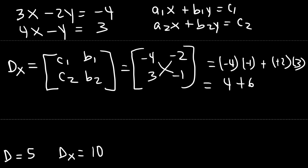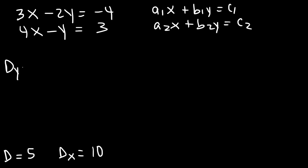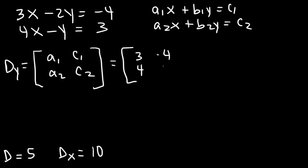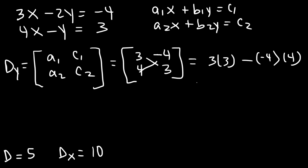Now let's calculate dy. We replace the coefficients of y with c1 and c2, so the elements are a1, a2, c1, c2. A1 is 3, a2 is 4, c1 is negative 4, c2 is 3. So it's 3 times 3, minus negative 4 times 4. 3 times 3 is 9, and 4 times 4 is 16. 9 plus 16 is 25, so dy equals 25.